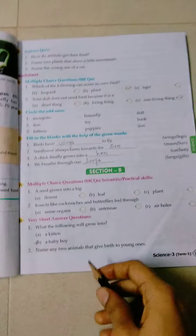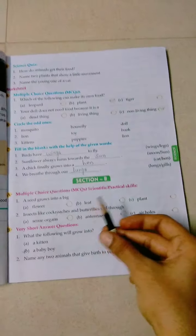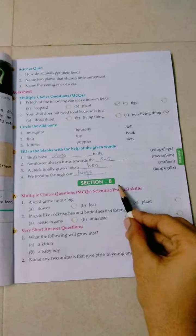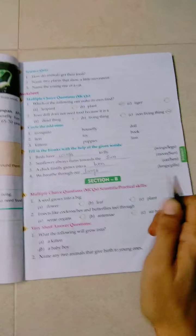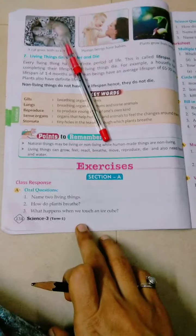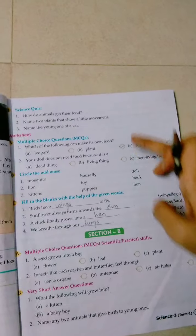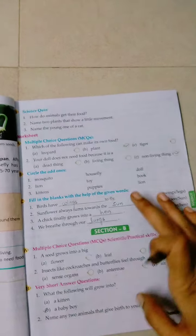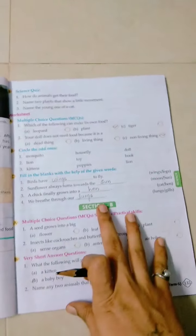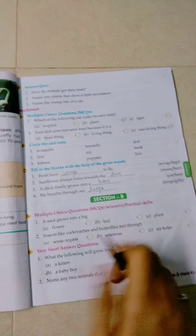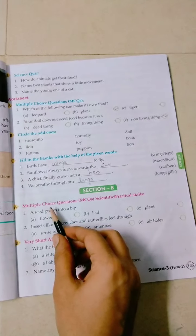Hello everyone. So students, today we are going to solve the section B of the exercise of chapter 1st, that is living and non-living things. As you know, in the last lecture, we solved the section A. If you remember these questions, we have solved all these questions. You should also memorize them.